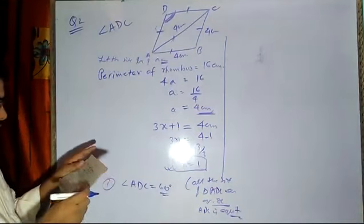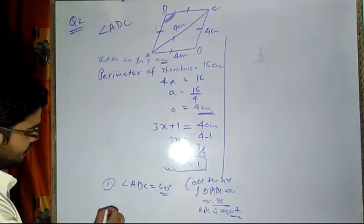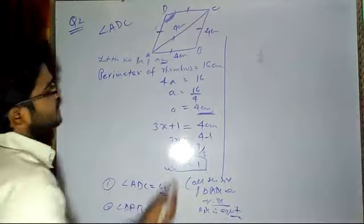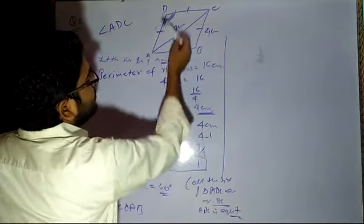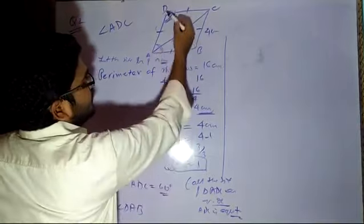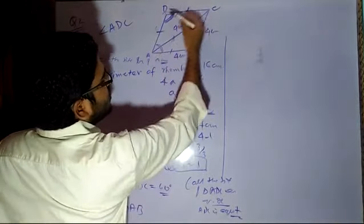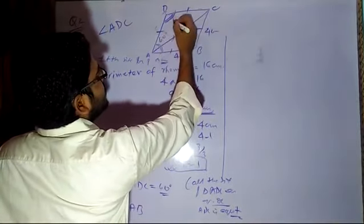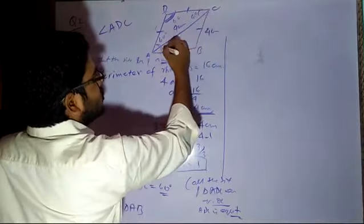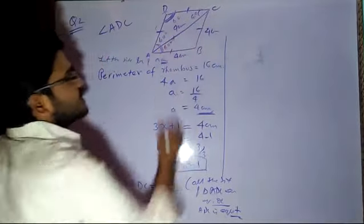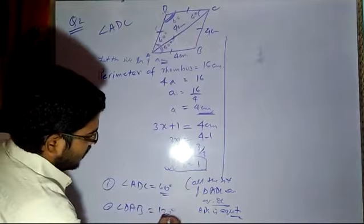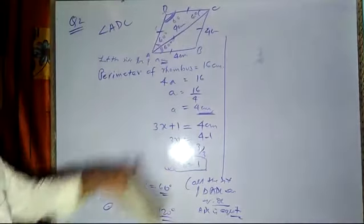The other part they are asking is angle DAB. Angle DAB is the complete angle at vertex A. Since triangle ADC was equilateral, each angle was 60 degrees. Similarly, triangle ABC will also have each angle as 60 degrees. So angle DAB will be equal to 60 + 60 = 120 degrees — it is the sum of two angles.